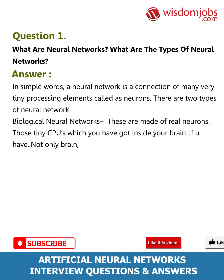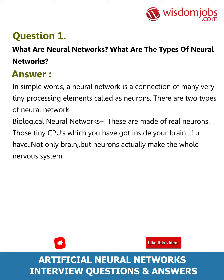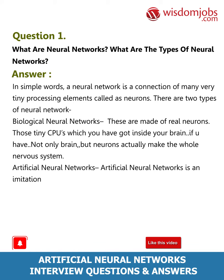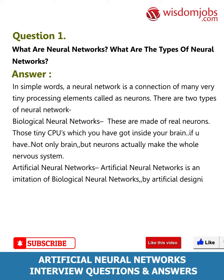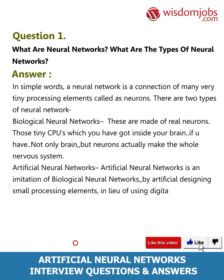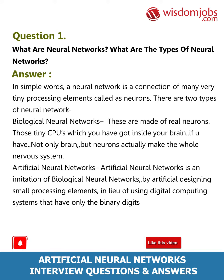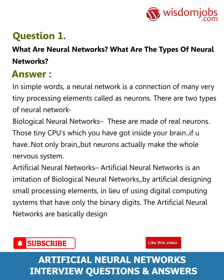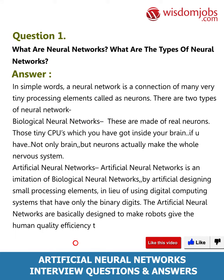Artificial neural networks are an imitation of biological neural networks, achieved by artificially designing small processing elements instead of using digital computing systems that have only binary digits. Artificial neural networks are basically designed to give robots human-quality efficiency in their work.